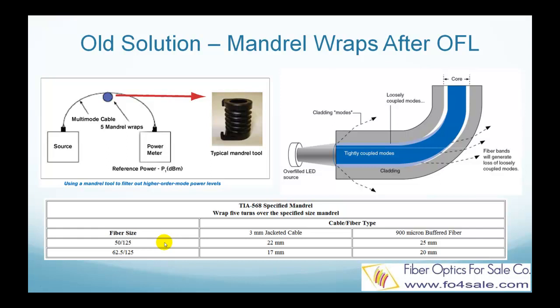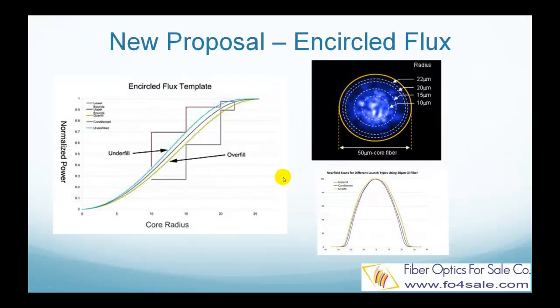This method is good for overfilled LED launch conditions up to 622 Mbps. But after that, Vixel lasers are used instead of traditional LEDs. So people found out that this test is not accurate enough for Gigabit Ethernet and 10 Gigabit Ethernet. In order to control the launch condition in real-world Vixel lasers using Gigabit Ethernet and 10 Gigabit Ethernet, the new encircled flux template method was developed. This standard proposes a field condition with upper and lower limits in order to get consistent, realistic, and repeatable loss readings.